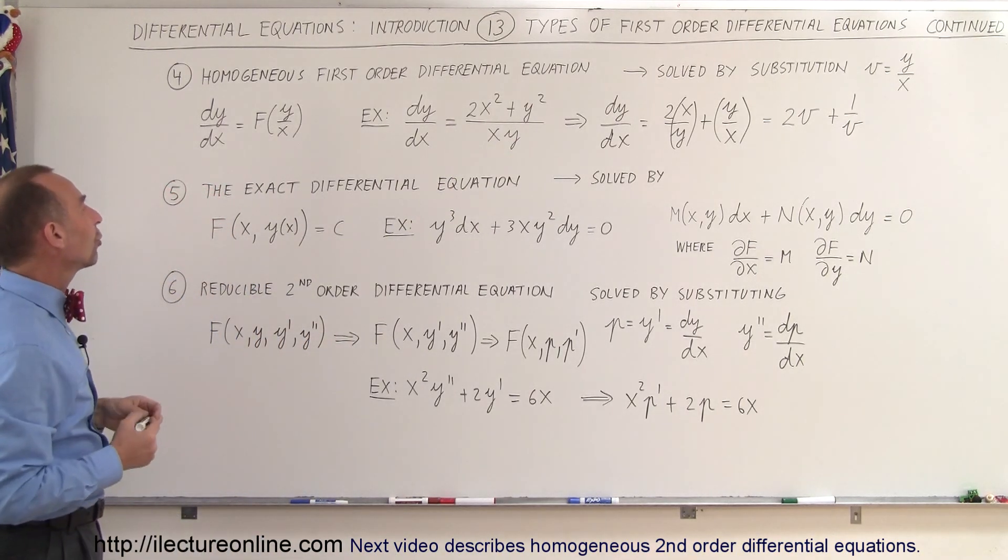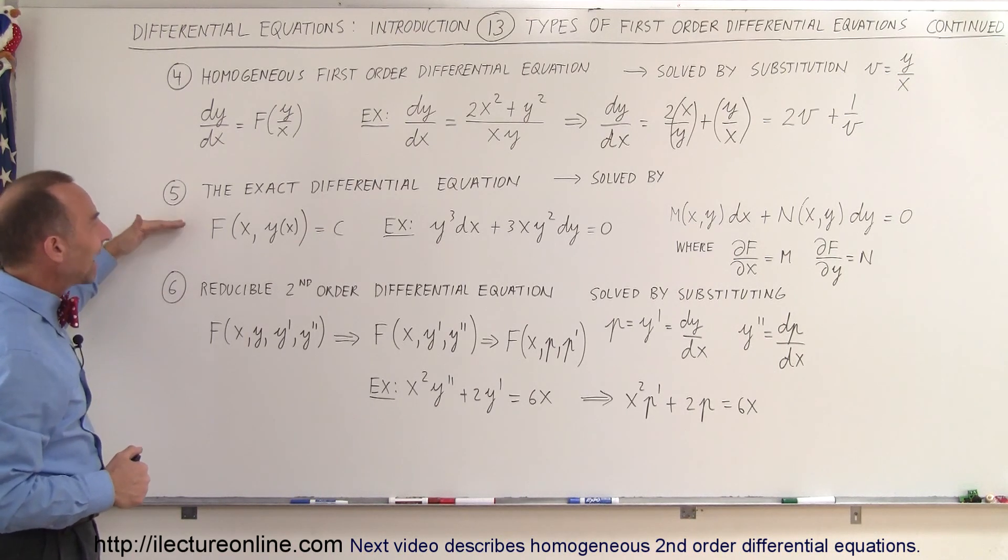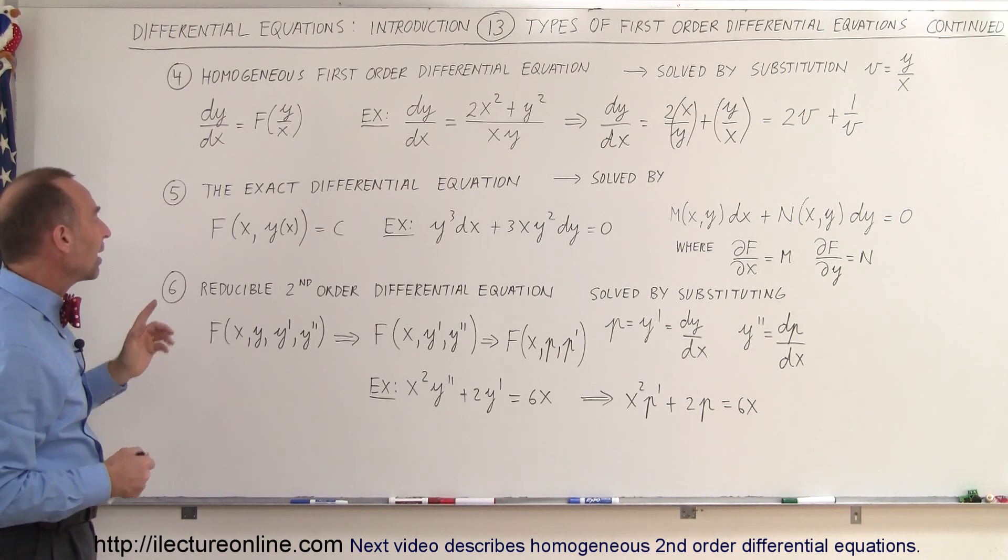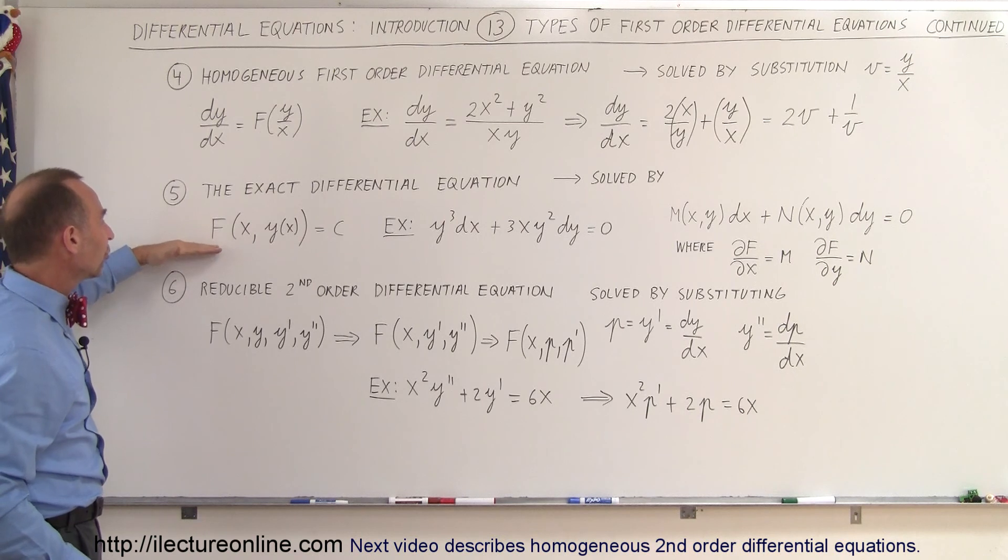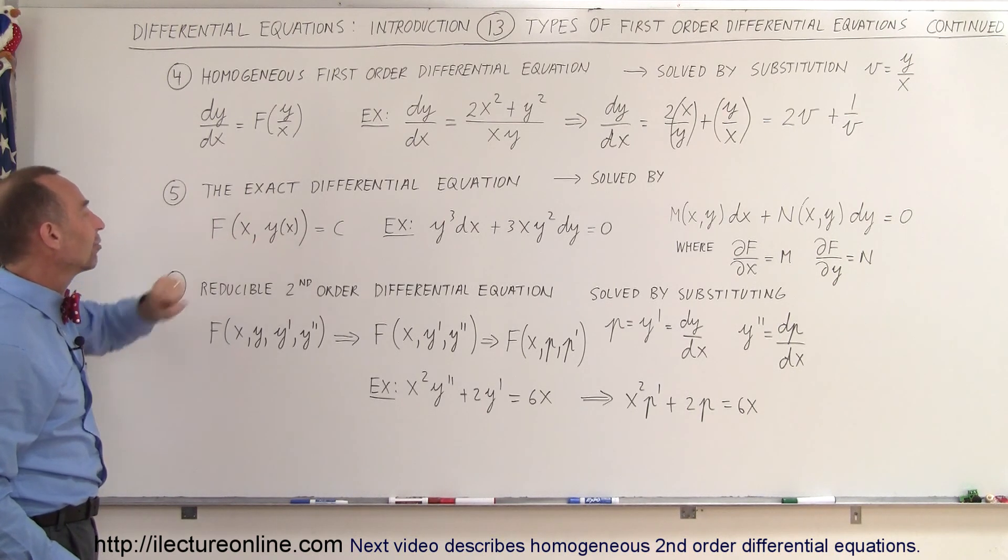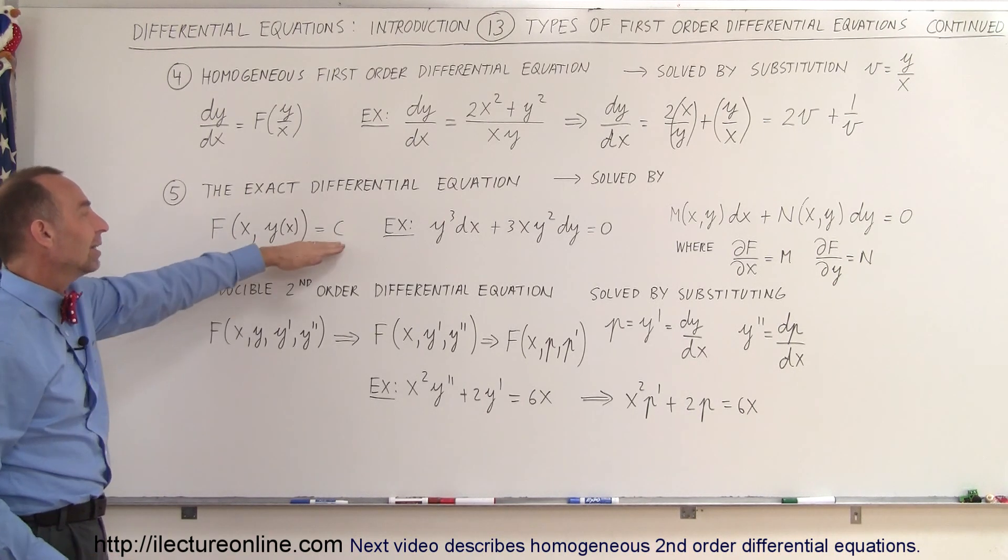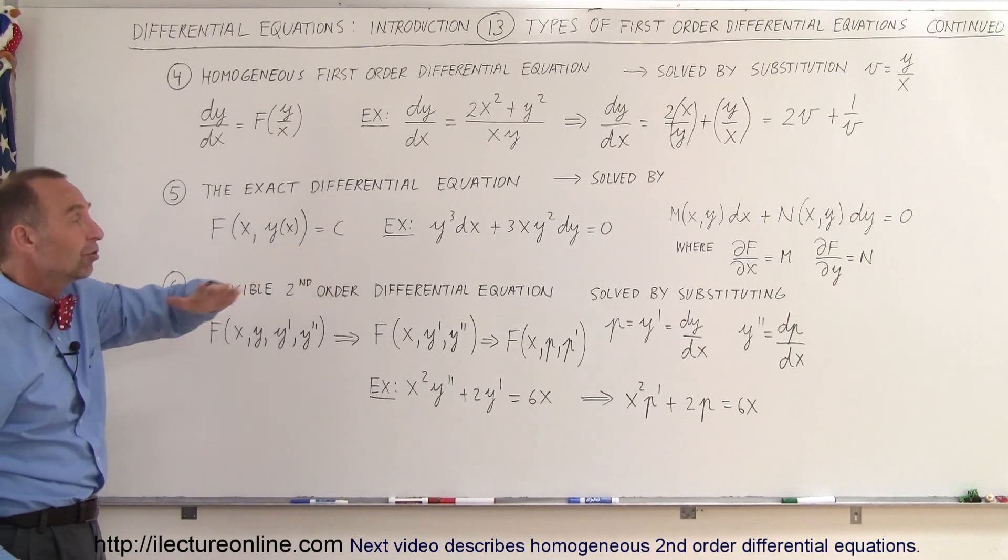The fifth type of differential equation is what we call the exact differential equation, where we have this equation to form some function of x and y as a function of x. And that is set equal to a constant, could be equal to 0 in this case.